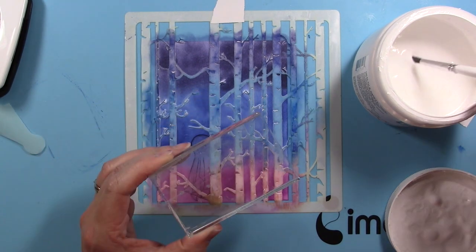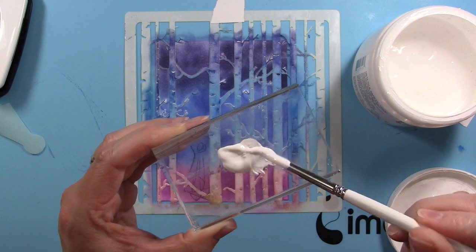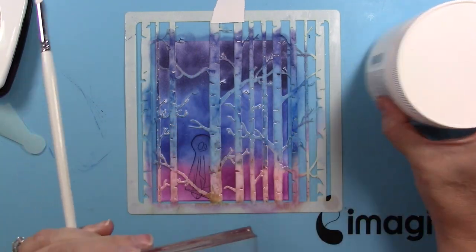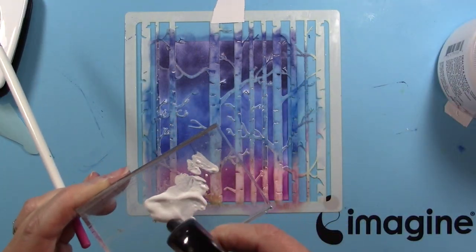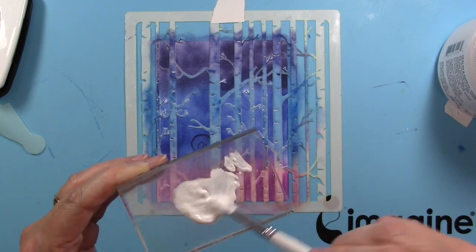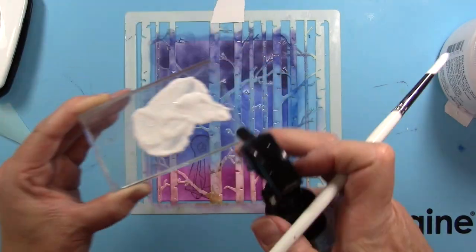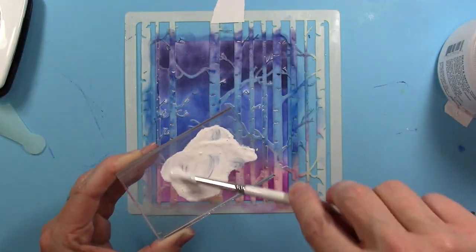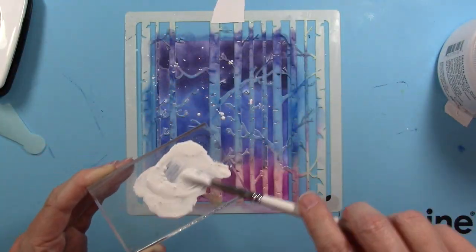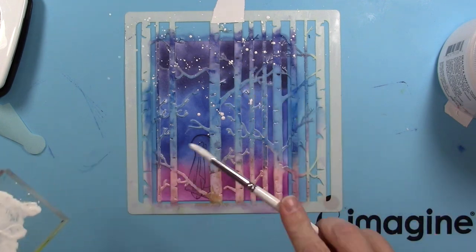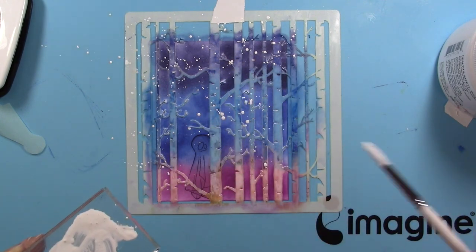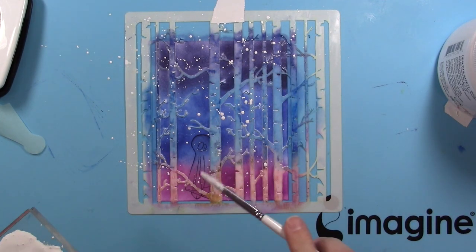Before I remove the mask and the stencil I want to add some stars to my sky, so I get a little bit of gesso or you could use white acrylic paint, I water it down and then I simply flick my paintbrush over the stencil and the little ghost so that I get a beautiful starry night. Then I will allow this to dry and remove the stencil and the mask.